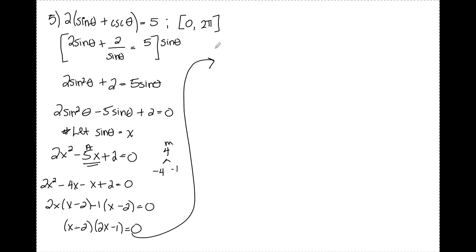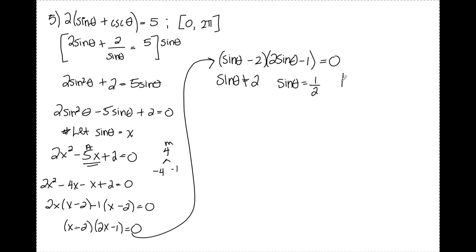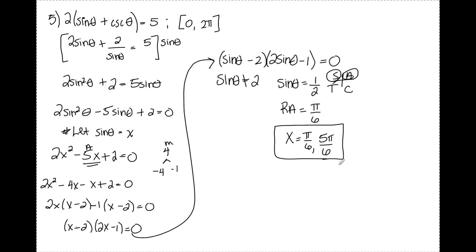Substituting sine theta back in for x: on the left, sine theta equals 2, which is no solution. On the right, sine theta equals positive 1/2. Since sine is positive, I have answers in the first and second quadrants. My reference angle for sine theta equals 1/2 is π/6. In the first quadrant, that's just π/6. In the second quadrant, minus 1 from the denominator gives 5π/6. So I have two solutions. That's it for solving trig equations using identities — if you have any questions, feel free to leave them in the comments below. Have a great day!